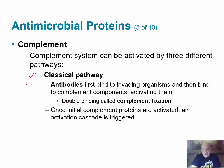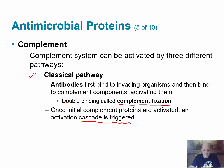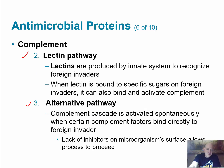Returning to the classical pathway: this pathway involves antibodies. Antibodies circulating in the blood recognize and bind to an invading organism like a bacterium. After the antibodies bind to that microorganism, they then bind to complement components, which activates them — this is called complement fixation. Once the initial complement proteins are activated, we get a cascade of reactions, each one triggering the next.